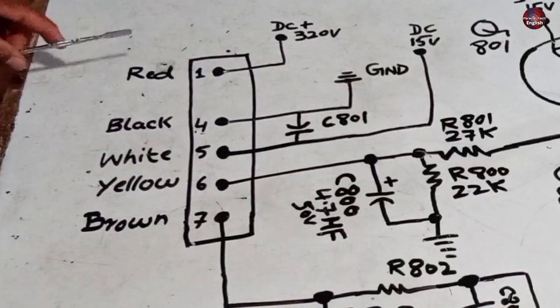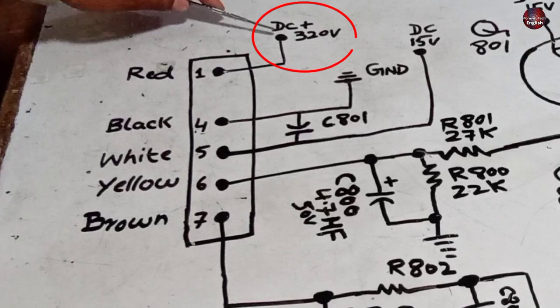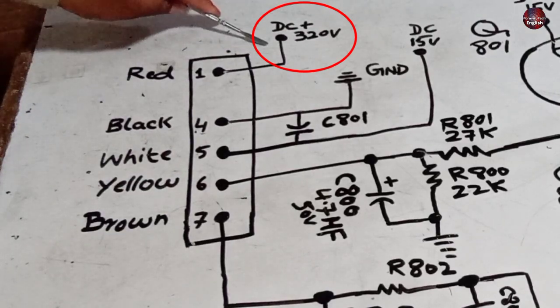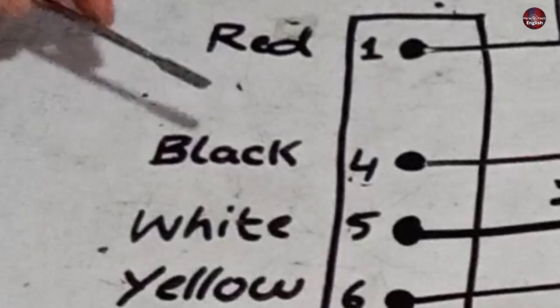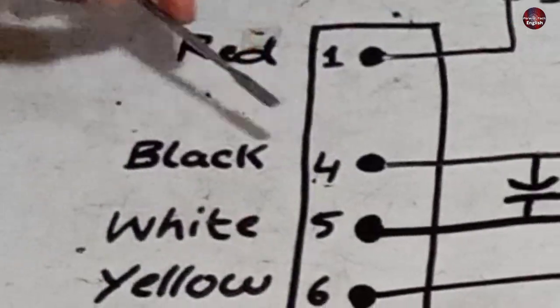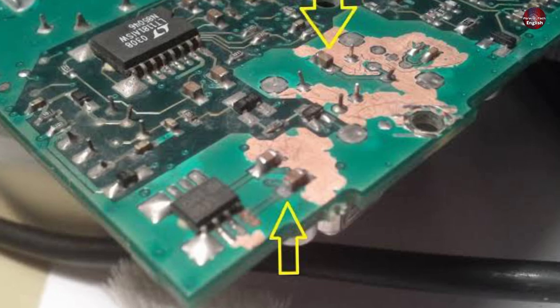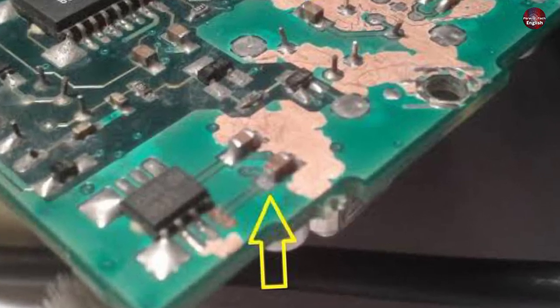This red and the first number pin should contain 320 DC volts, and the fan will work properly. Otherwise, it will not work. As you can see, the black and the 4 number pin is directly grounded, but if, due to some reason, the ground wire is missing, still the motor will not work.